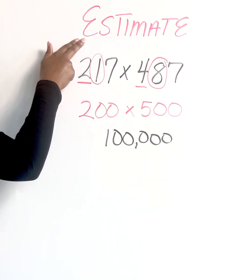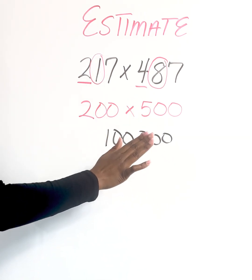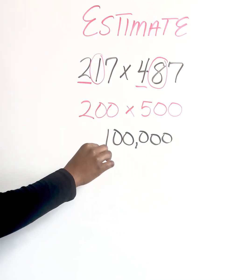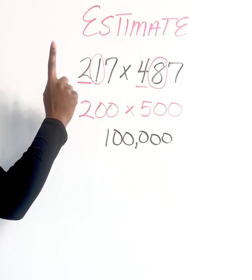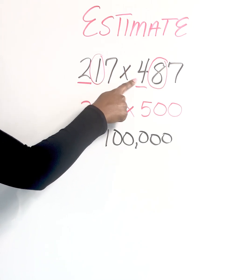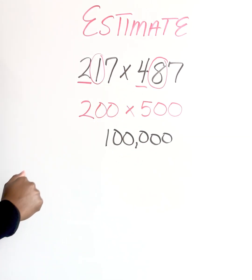And you always round unless otherwise stated, unless the question specifies, you will normally just do front end estimation or you round based on the leading value. So because our two was in a hundredth place, we rounded to the nearest hundred. And because four was in a hundredth place, we rounded to the nearest hundred. And then we did the math.